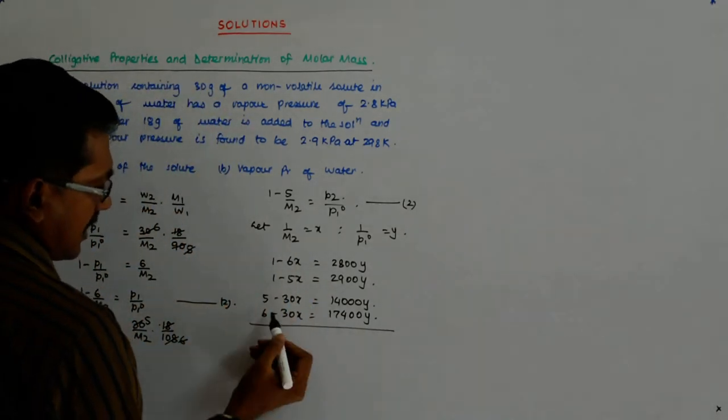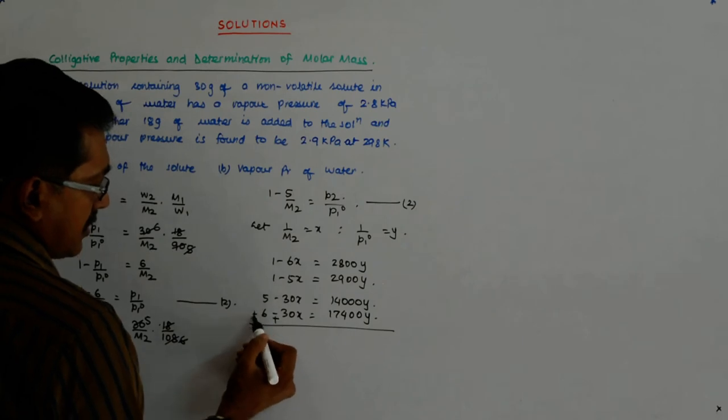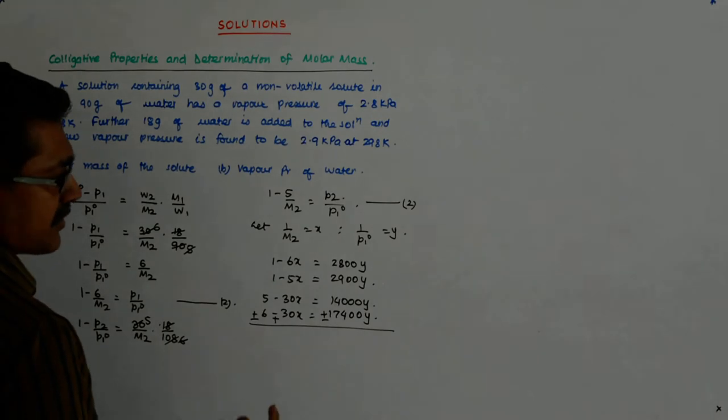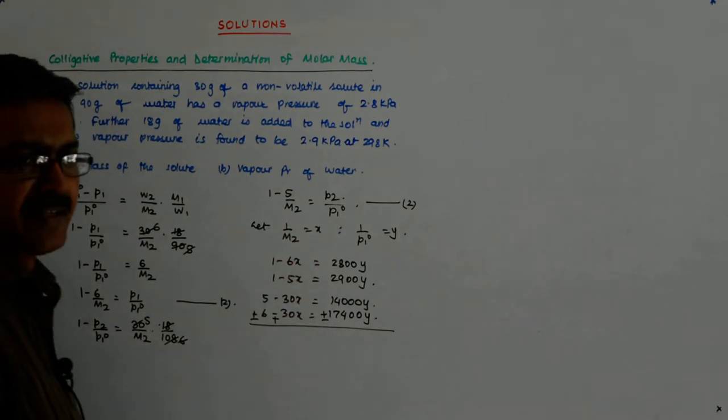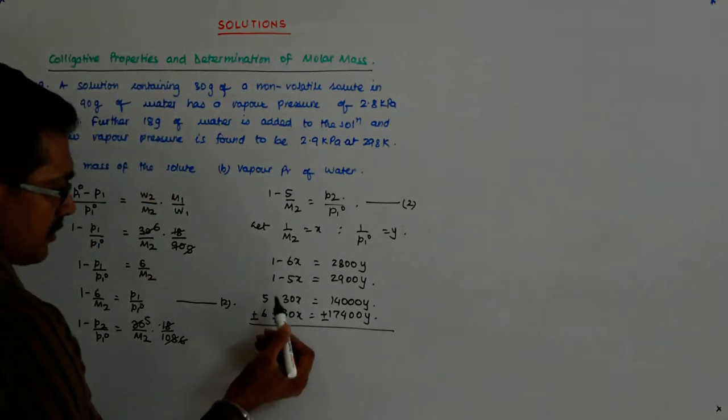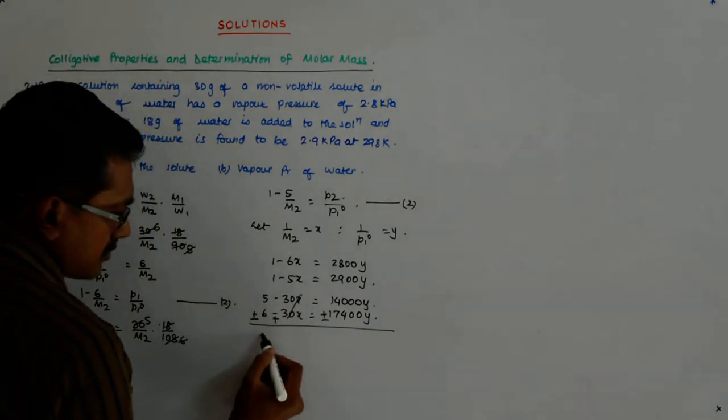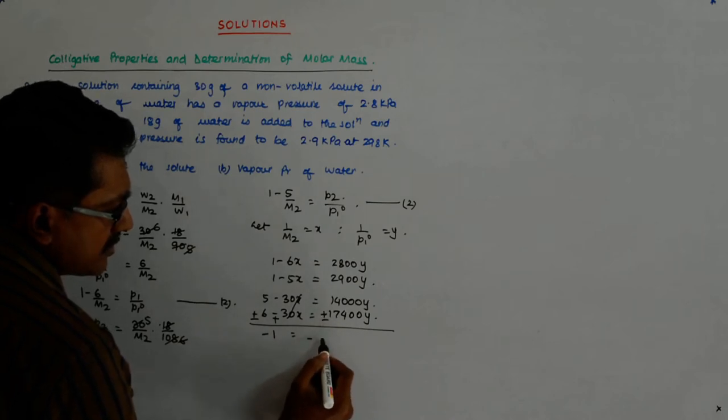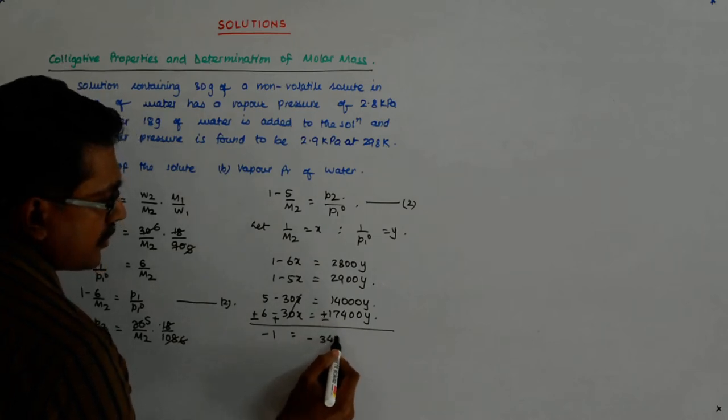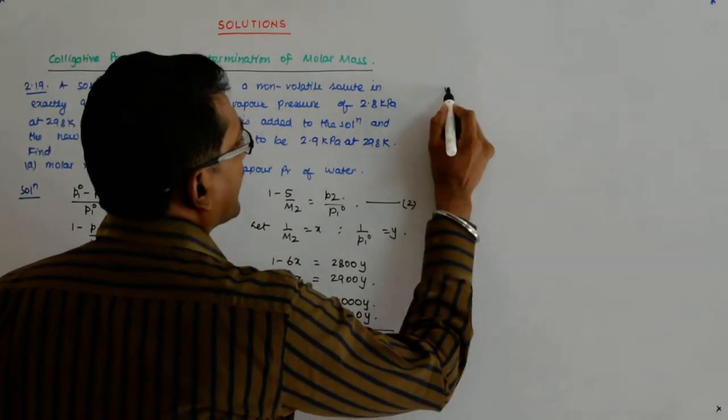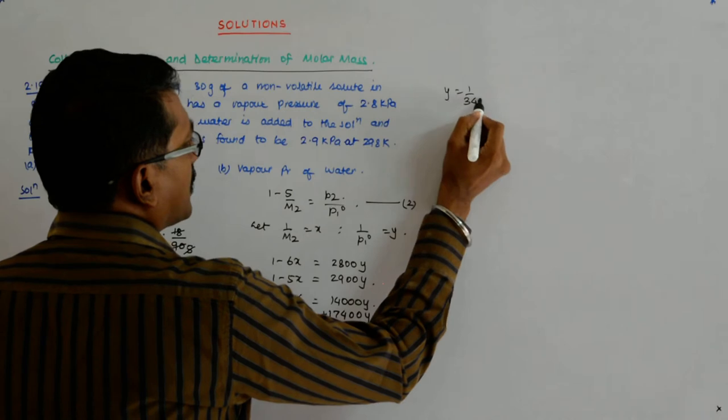But I do not encourage that because many times in some unforeseen circumstances you tend to commit a mistake. For example, finding out P1_0 and then people start writing it as Pascal. So why do that? So minus 1 is equal to minus 3400y. So y is equal to 1 by 3400.